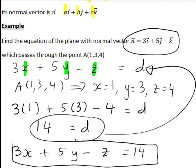So that is how we find the equation of a plane when we know a normal vector to the plane and a specific point on the plane.